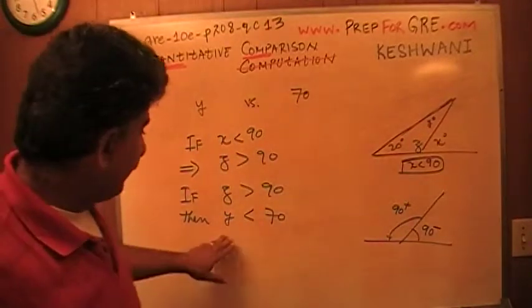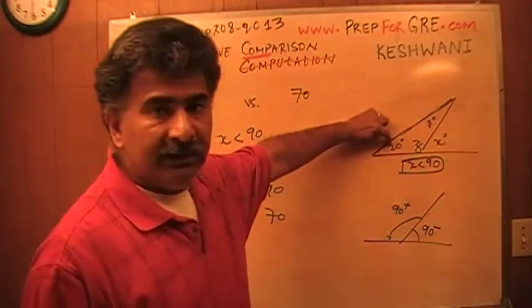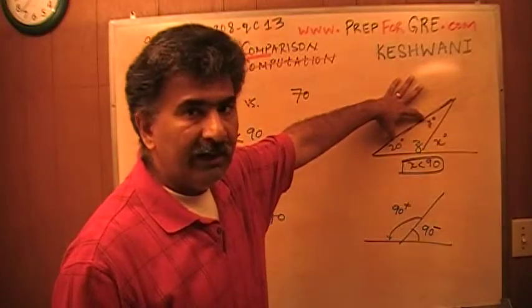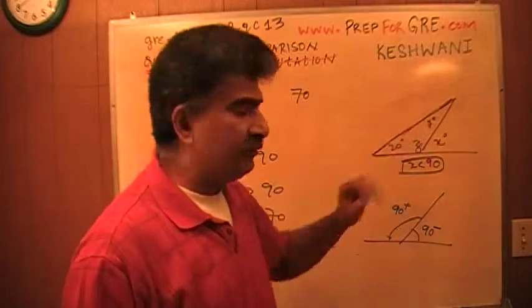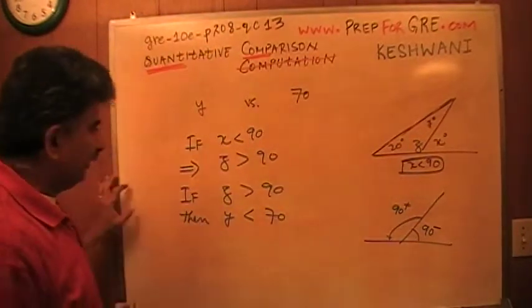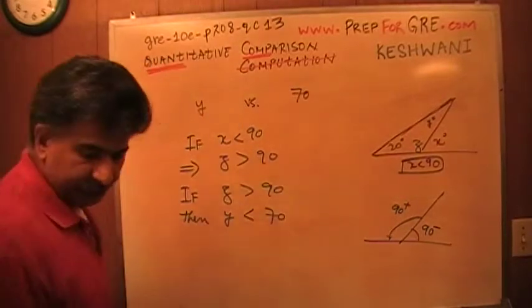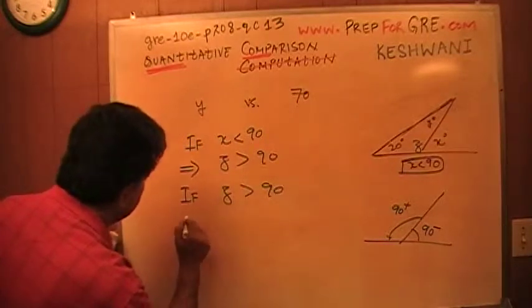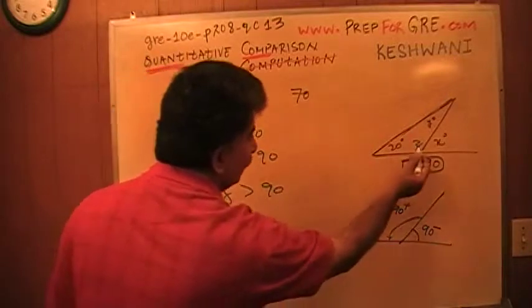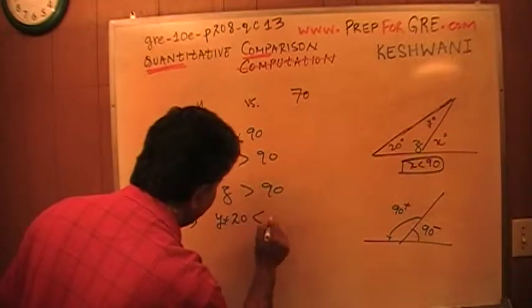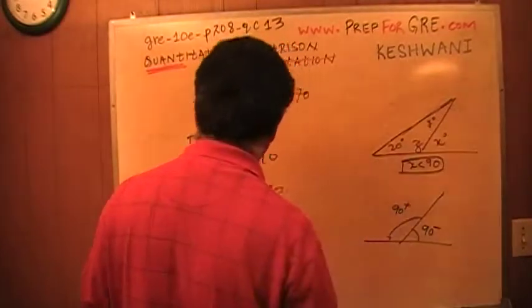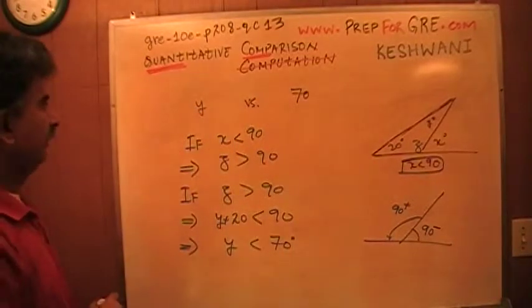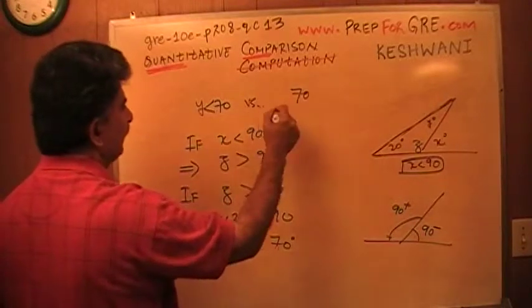Why is that? Why does y have to be less than 70? Because if this is more than 90, then sum of these two, 20 plus y has to be less than 90. Because altogether in a triangle, the three angles have to add up to 180. So if z is more than 90, that implies that y plus 20 has to be less than 90, which also implies that y is less than 70. As this is 70, therefore, the answer is b.